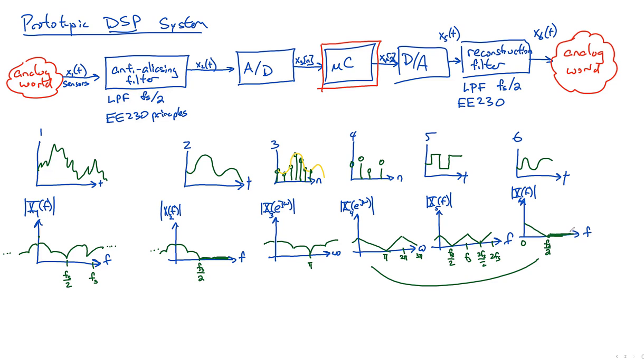So the takeaway there is that if you ever hear about what is an anti-aliasing filter or what is a reconstruction filter - and hint, you will definitely hear about that on the final exam and probably on the FE, and if you go to grad school, definitely in grad school - just know they're both low-pass filters at f_S over 2, and that solves the problem.